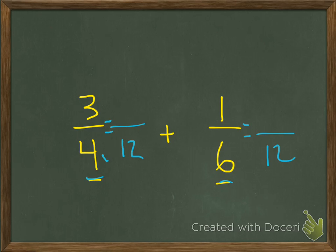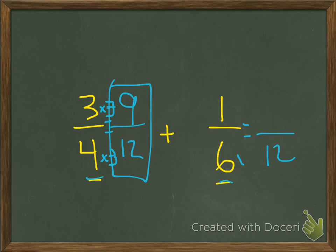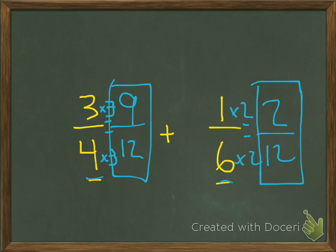Since 4 times 3 equals 12, I multiply the numerator by 3 as well: 3 times 3 equals 9, so three-fourths equals nine-twelfths. For one-sixth: 6 times 2 equals 12, so I multiply the numerator by 2 to make it equivalent, giving me two-twelfths. So one-sixth equals two-twelfths.